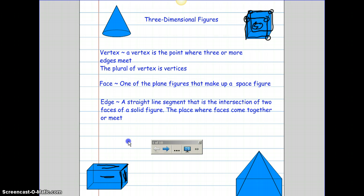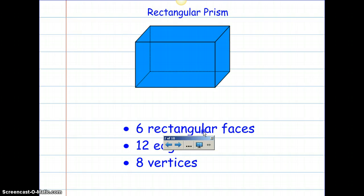That's our vocabulary. Make sure that you pause and fill in your vocabulary. And we're going to move on to some of the different types of solids that we're going to be learning. First, we have a rectangular prism.